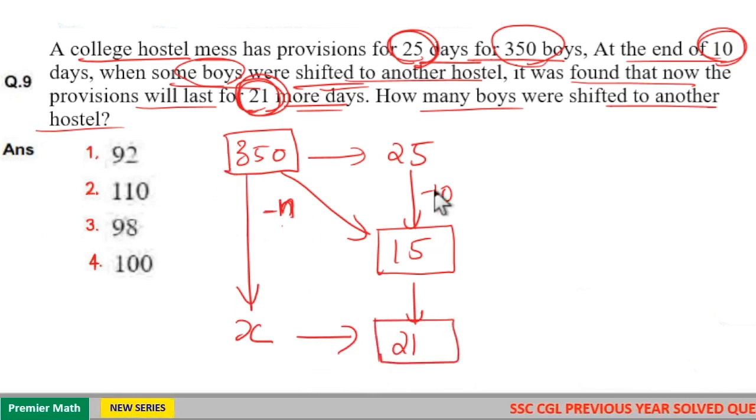You can see after 10 days for 350 boys, food will last for 15 days. But after leaving this n number of boys, there are x number of boys remaining.